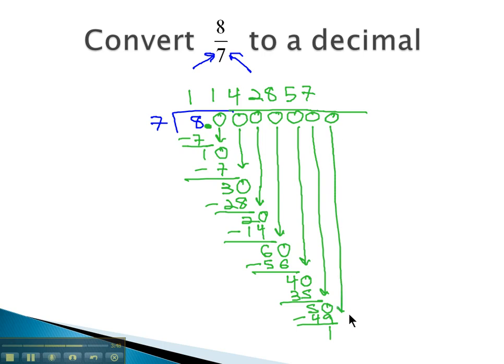Add another 0, bring it down. And we get 7 goes into 10 once. But hold on a second. We have divided 7 into 10 before. 7 went into 10 all the way up here before.